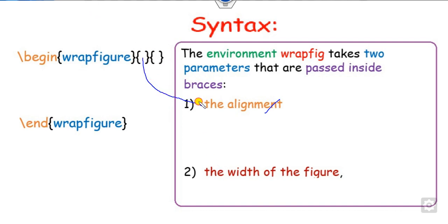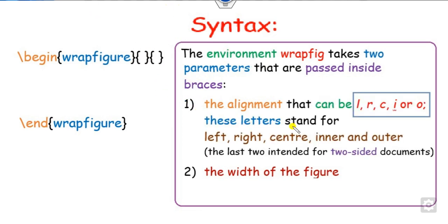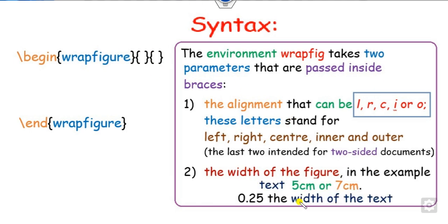So the first one is the alignment, whether you want to use left L, R for right, C for center, inner and outer. Here inner and outer are used only when you are using the two-sided document. While the second curly braces will define the width of the figure, like five centimeters, seven centimeters and so on.